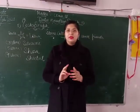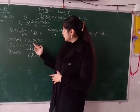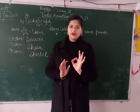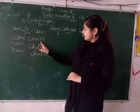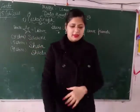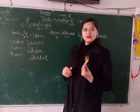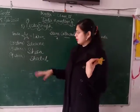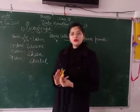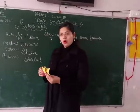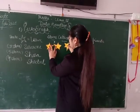Today we are going to look at an example with three friends. The names of the three friends are Suzy, Shiza, and Shikhar. Suzy has collected three stars. We represent this in the form of data handling — in the pictograph we draw three stars: one, two, and three stars.